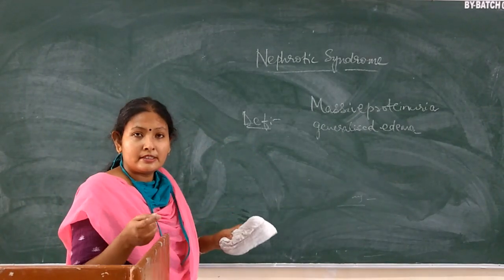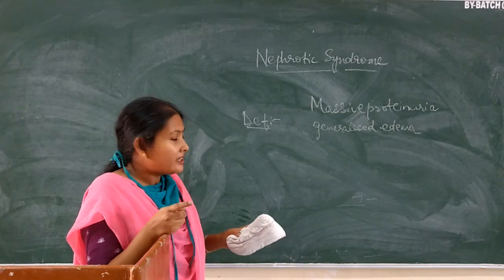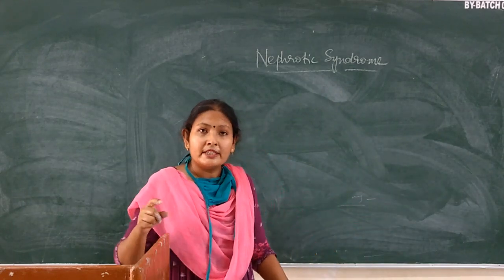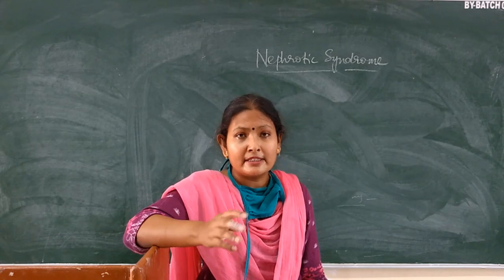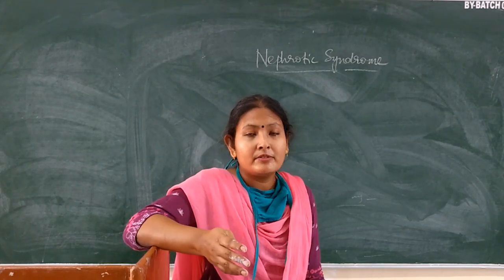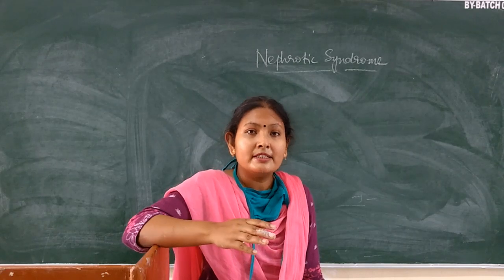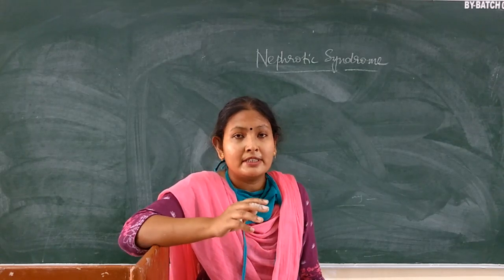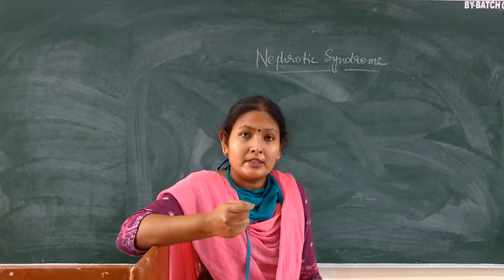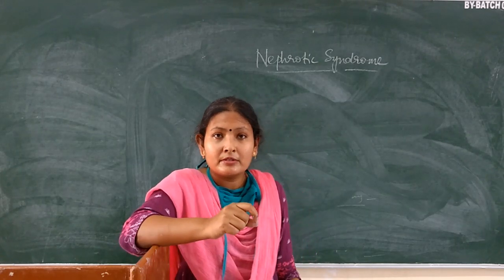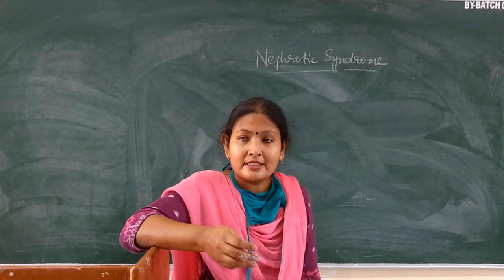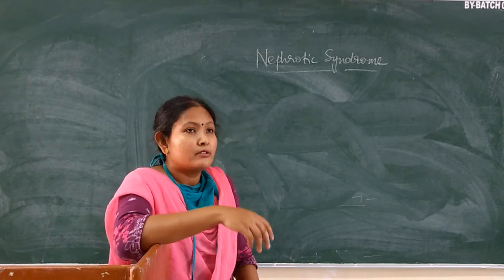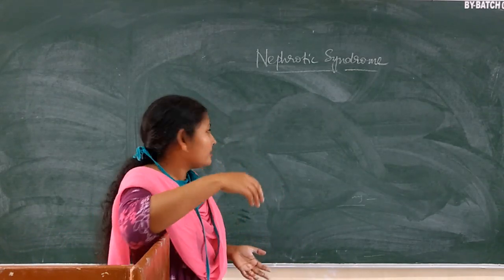Let us now see the causes of nephrotic syndrome. Normally nephrotic syndrome is a disease of children, but in adults, because of any other type of disease, secondary to that disease, nephrotic syndrome can occur. Also, some kidney diseases which cause damage to the glomerulus can also initiate nephrotic syndrome. It is called a syndrome because it is a collection of symptoms causing the disease.